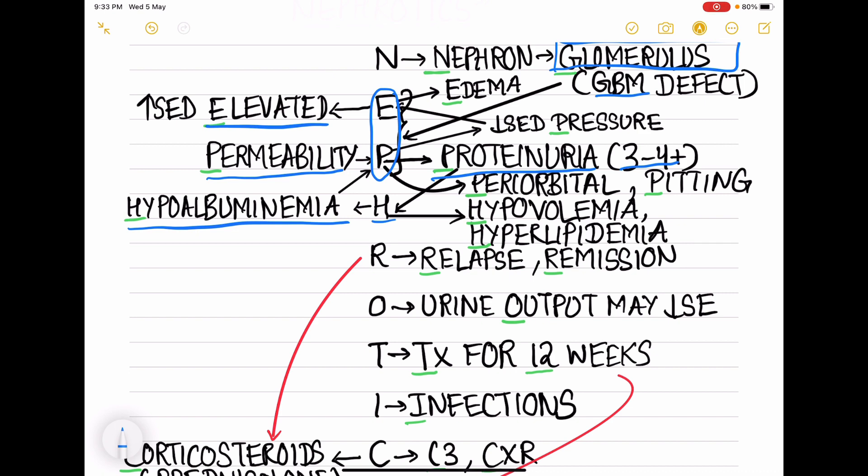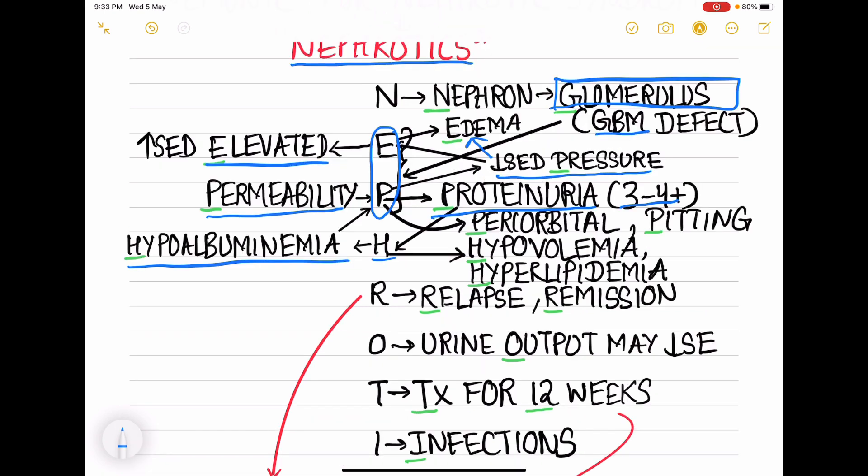Proteinuria leads to hypoalbuminemia, then hypoalbuminemia leads to decreased oncotic pressure. As a result there will be edema - that is E for edema. This edema will be initially periorbital in nature - that is from P we know periorbital. Later it becomes generalized and it is a pitting type of edema.